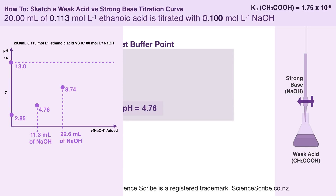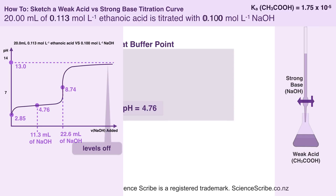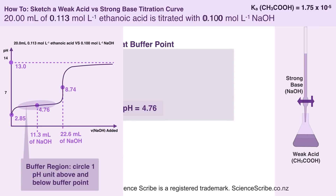I now have enough points to sketch the titration curve. There are a few things to mention: at the start of the titration curve, it should be slightly curved. In the buffer region, it's not completely flat — it's still sloping, just not as much. For a weak acid versus strong base titration, the vertical region isn't hugely vertical — it's just a slight vertical section. Then it levels off towards 13, but never really touches 13. If we want to show the buffer region on a titration curve, we circle the area that's about one pH unit above or below the buffer point.